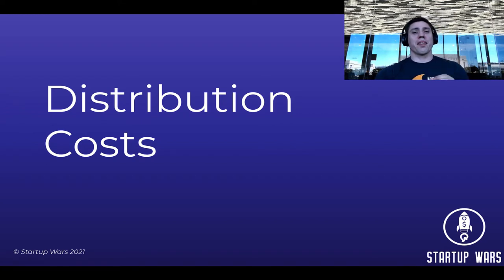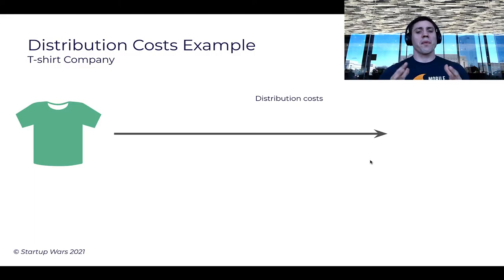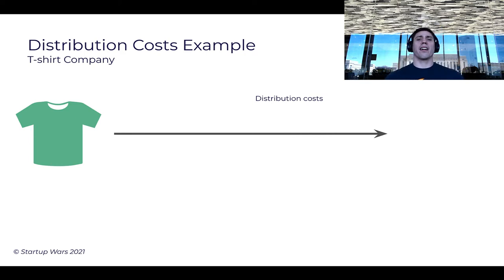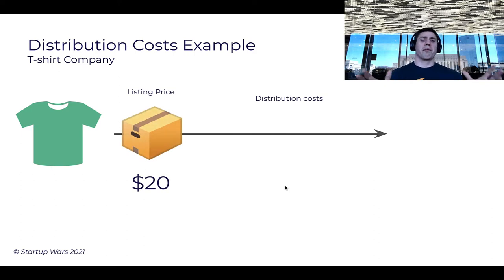In order to do that, I'm going to give you an illustration — an example from one of our simulation games, which is to own your own t-shirt company. Let's imagine that you are the proud owner of a t-shirt company. You decide to start this company and after doing some research, you determine that college students are really going to be your target demographic. The research shows that college students are perfectly fine paying about $20 per t-shirt.